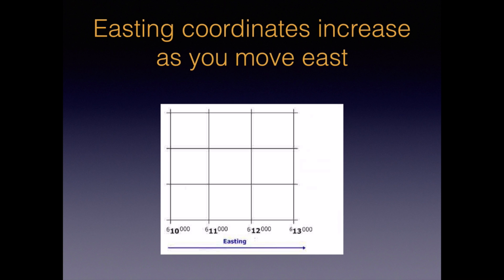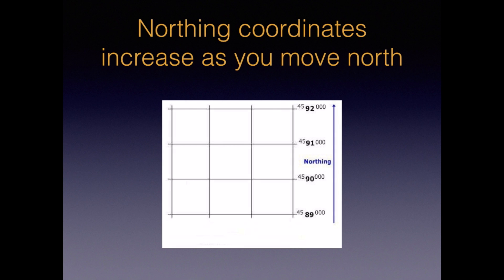The map nerd stuff is over. In the real world, UTM is actually really simple. Easting values increase as we move east on a map and are always six digits. On this grid, we see the easting increase by one kilometer each square as we move to the east. Northing values increase as we move north, and northing values, at least in North America, are always seven digits. On this grid, we see the northing increase by one kilometer each square as we move north.